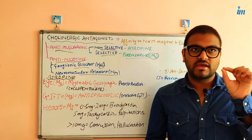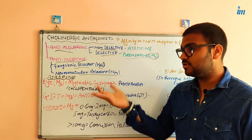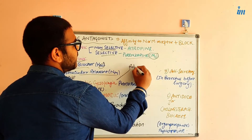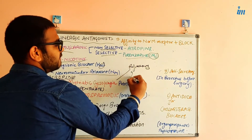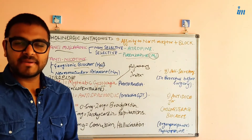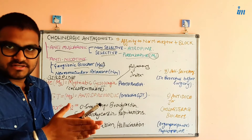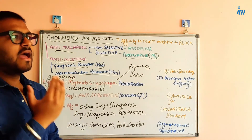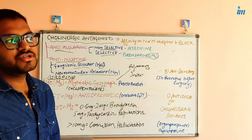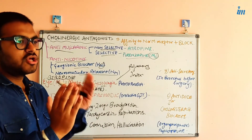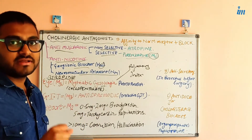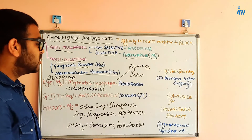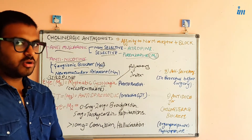Cycloplegia is used to measure the refractory index of the eye. We want to fix the lens at a point — stop it from becoming globular, thin, or thick — so we arrest it. Once the lens is fixed, only then can you measure the refractory index. For this purpose, atropine can be used as eye drops to block M3 receptors in the eye.